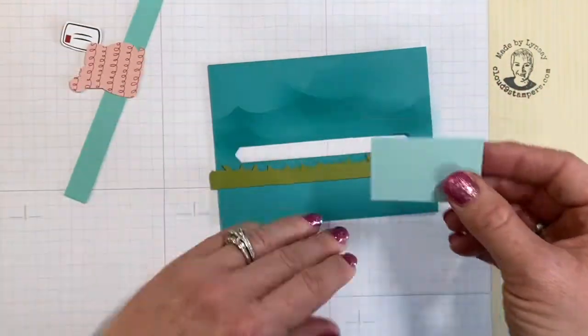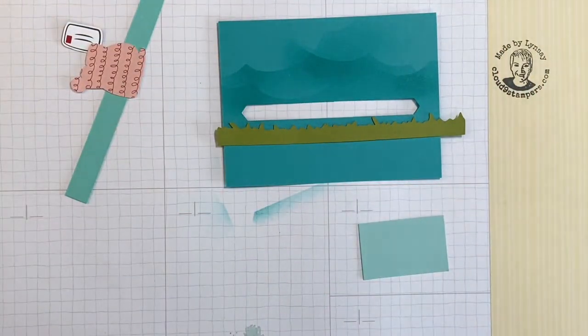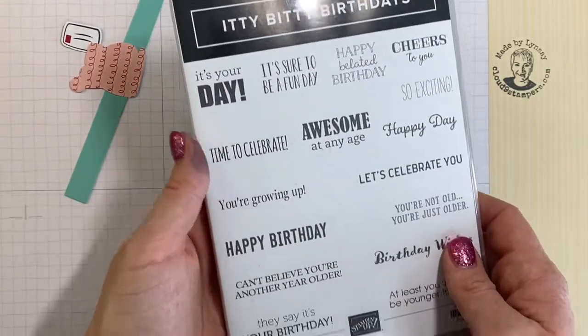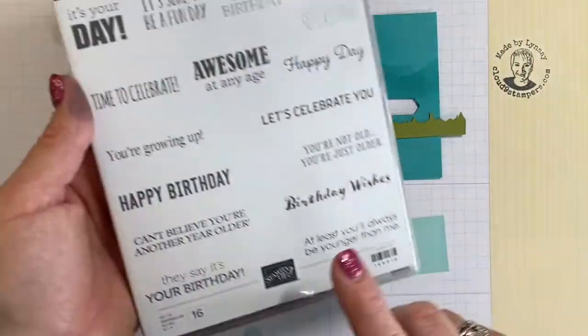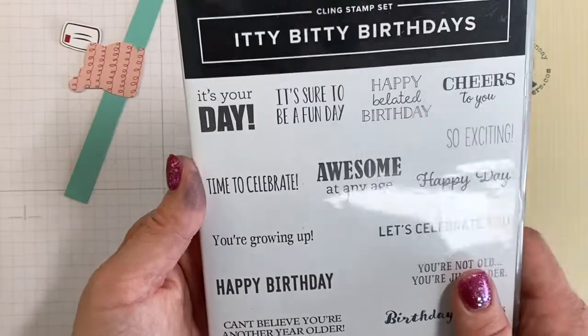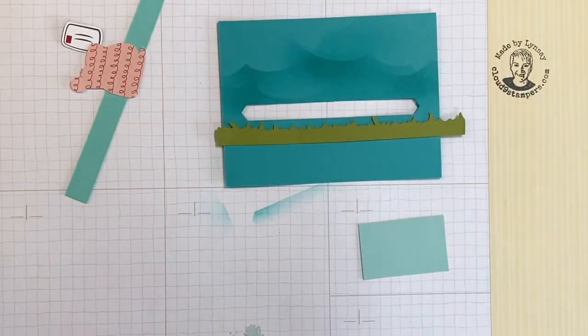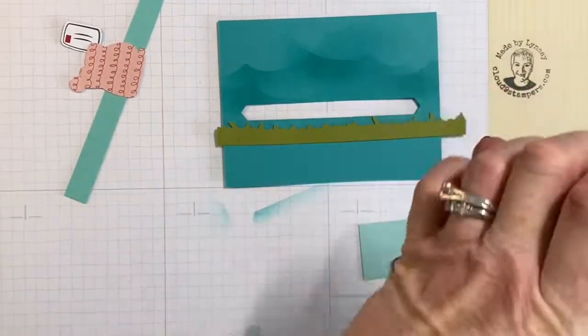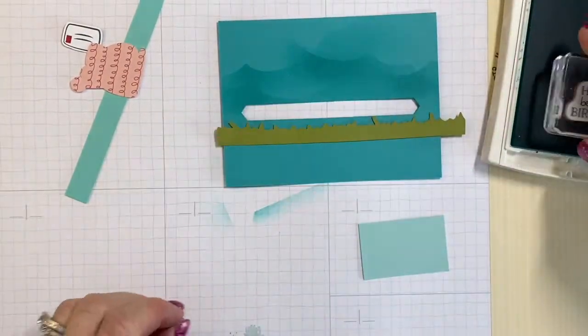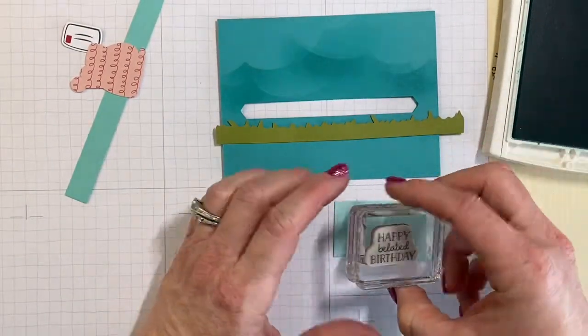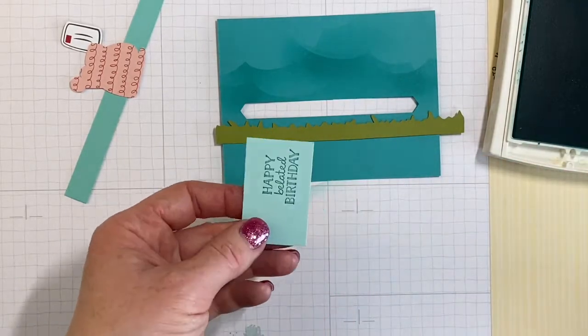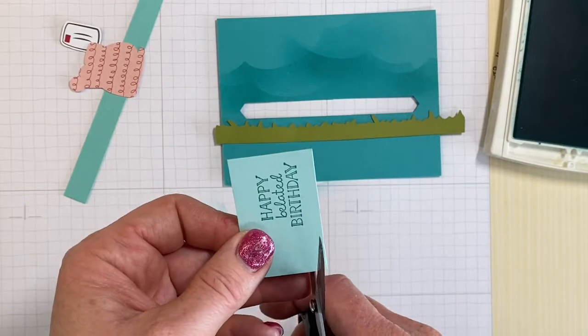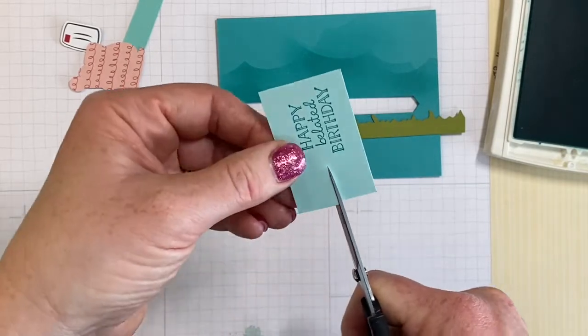The next thing we're going to do is add a little greeting. This is using the stamp set Itty Bitty Birthdays, one of my favorites. I love the greetings and I love the font. This one I thought it was cute to put belated birthday because we're using a snail, so we're going to stamp that in Bermuda Bay. I'd recommend hugging the right hand side of the paper.